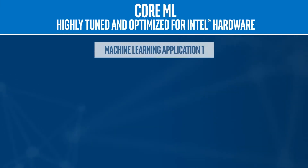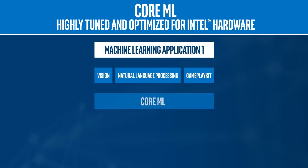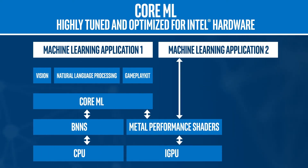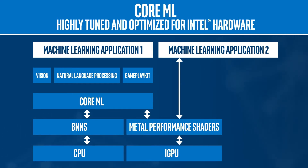Core ML is built on top of low-level frameworks such as MPS, the Intel processor graphics, and basic neural network subroutines on Intel processors — highly tuned and optimized for Intel hardware. MPS is the main building block for Core ML to run machine learning workloads on GPUs. As an application developer, you can write your own application to use the MPS API directly to target underlying GPU devices.